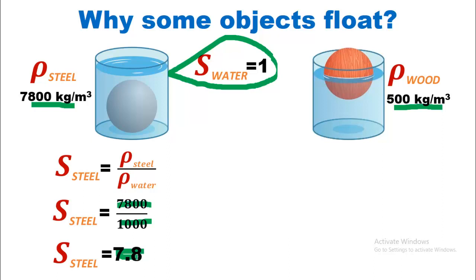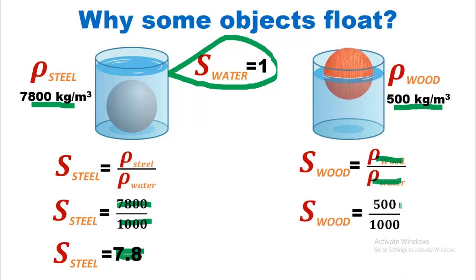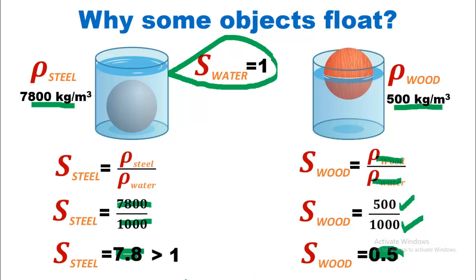Now coming towards wood, similarly the same formula is applied: density of wood divided by density of water. Putting in the values, the density of wood is 500 and the density of water is 1000 kg per cubic meter. By simplifying, we get the value 0.5, with no unit.